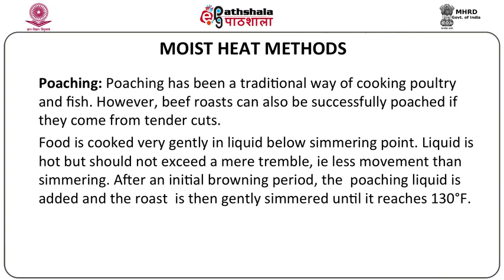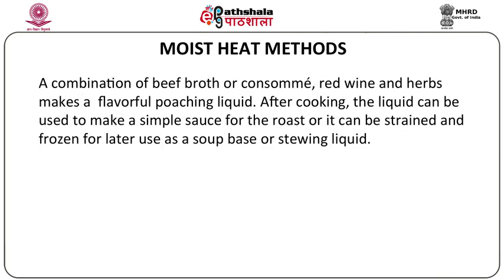In poaching, the meat is initially browned or seared and then the poaching liquid is added, after which the meat is simmered until it becomes tender, usually at a temperature of 130 degrees Fahrenheit, which is below the boiling point. The liquid used for poaching could be a beef broth, red wine, or a mixture of herbs. This liquid can be used to make a simple sauce after the meat has been poached, or it can be strained and frozen for use later as a soup base or stewing liquid.